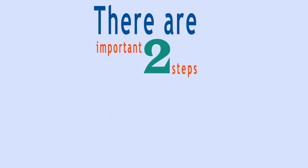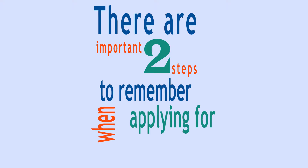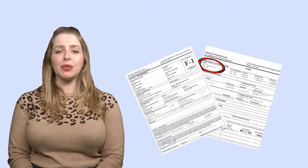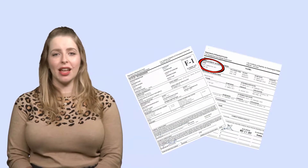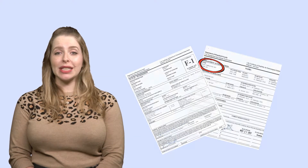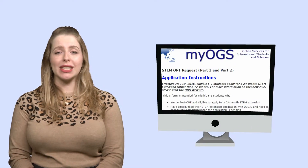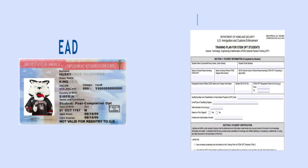There are two important steps to remember when applying for STEM OPT. The first step is to receive an I-20 with STEM OPT recommendation from OGS. To do this, you must apply online through the OGS e-form. You will have to submit your current OPT EAD and I-983 training plan for STEM OPT students.